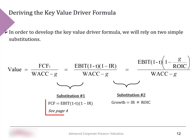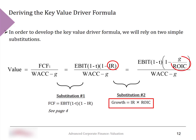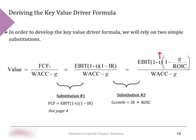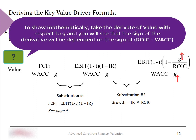Expanding the formula: free cash flow equals EBIT times (1 minus tax rate) times (1 minus investment rate). Using the fundamental growth formula, we can replace the investment rate with G divided by return on invested capital. This leads to a final equation where G appears in both the numerator and denominator. The value drivers become clear: higher current earnings → higher value; higher return on capital → higher value; higher tax rate → lower value; higher cost of capital → lower value. The effect of growth G is now ambiguous.